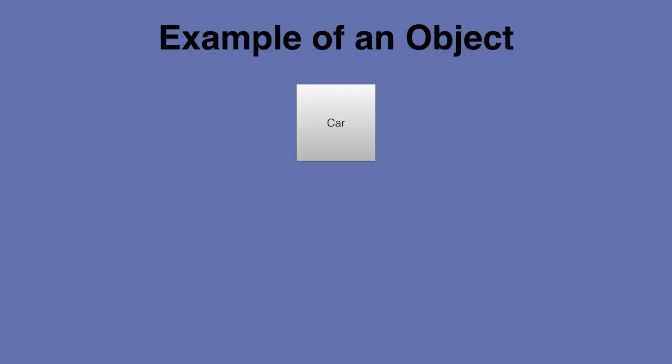I know it could be a little confusing, but let me just give you a couple of examples, actually one example of an object. Let's say, for example, we have a car object.